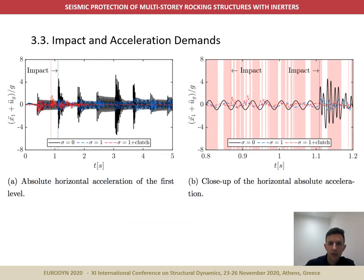In these figures, the effect of the inertor on the acceleration response is examined. It is clear from the plots that when the inertor is included, the amplitude of the high-frequency oscillations is significantly reduced. The engagement and disengagement of the clutch is indicated by the shaded areas in figure B. Although the inclusion of the clutch reduces the rotation response, the engagement and disengagement cycles can happen at inconvenient times, thus undermining the ability of the inertor to control the acceleration demands. Nevertheless, they remain considerably lower than the bare rocking case.